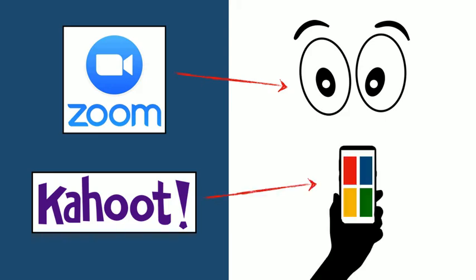Kahoot, on the other hand, may be new to some of you. Kahoot is a quiz program that allows users to answer questions using a device. This is how you answer the trivia questions. Kahoot then automatically scores each player based on how quickly they choose the correct answer. Incorrect answers are automatically scored as zero.